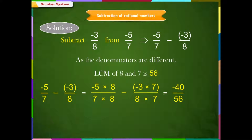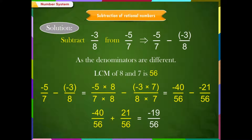Minus 40/56 minus (minus 21/56): the additive inverse of minus 21/56 is 21/56. Therefore, this equals minus 40/56 plus 21/56, which equals minus 19/56.